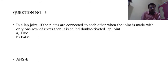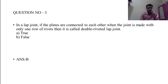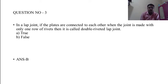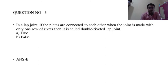Question 3: In a lap joint, if the plates are connected to each other and the joint is made with only one row of rivets, then it is called a double riveted lap joint — true or false? The answer is false.